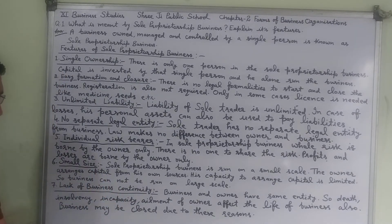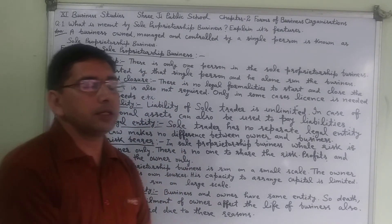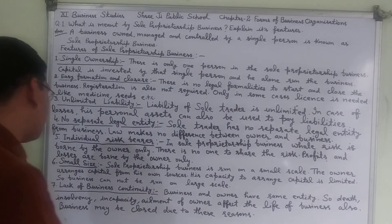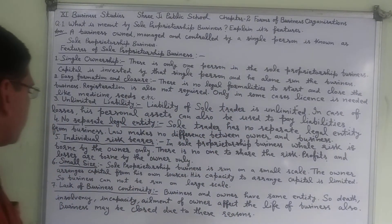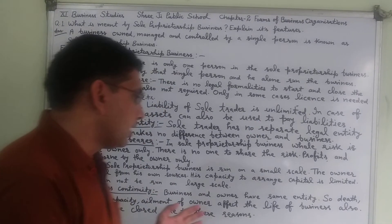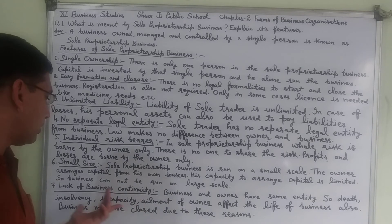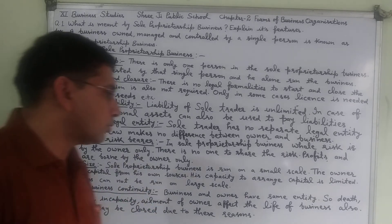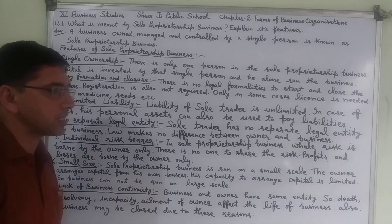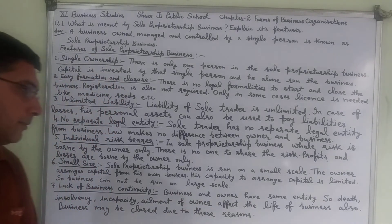The last feature is lack of business continuity. There is only one person, and in case of death, insolvency, incapacity, or similar circumstances, it is hard to run the business. If the person dies or becomes insolvent, generally the business will be closed. Business and owner have the same entity, so death, insolvency, incapacity, or ailment of the owner directly affects the life of the business.